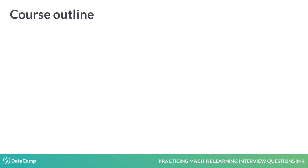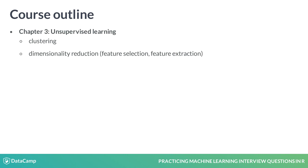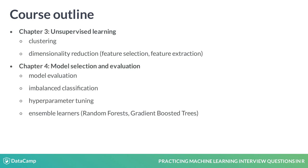In chapter 3, you will hone your unsupervised learning skills through questions about clustering and dimensionality reduction. Finally, in chapter 4, you will delve into model selection and evaluation, including imbalanced classification and hyperparameter tuning. You will wrap up studying the algorithmic differences between two very popular ensemble models: random forest and gradient boosted trees.